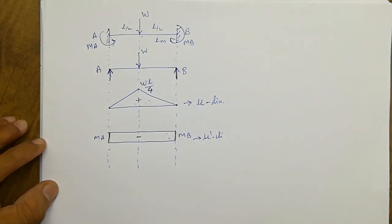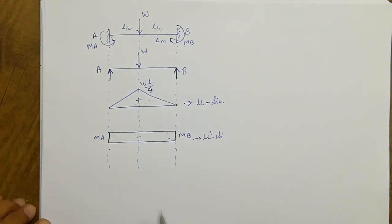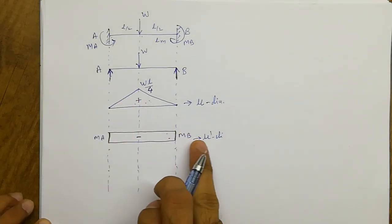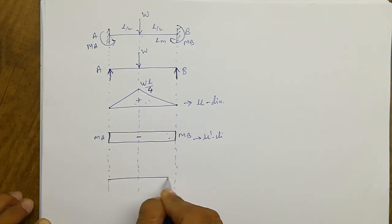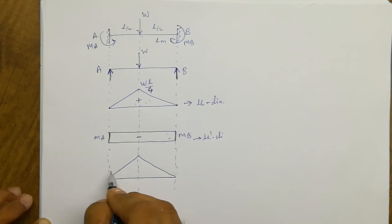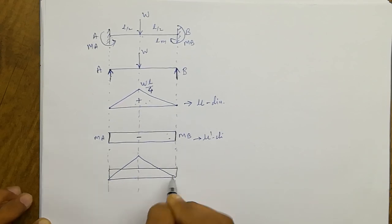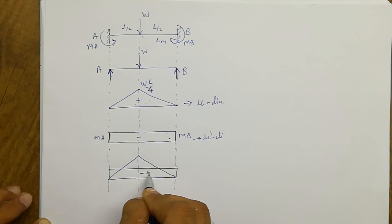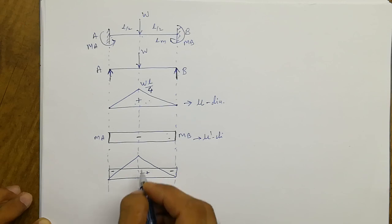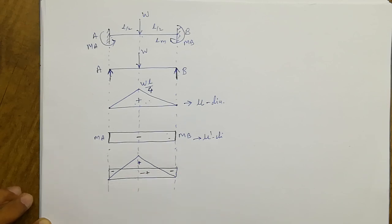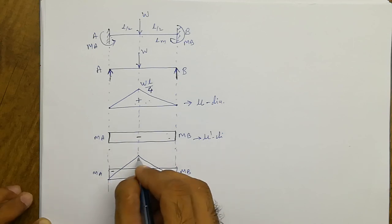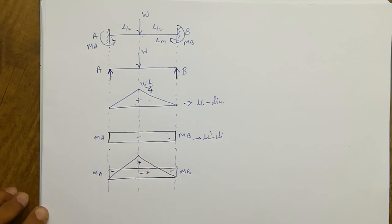If we club together the mu dash and mu diagrams, we will have the final bending moment diagram. So let me superimpose the mu dash diagram on the mu diagram. Negative and positive cancel at the ends. This portion is negative, this portion is negative, and this portion is positive. The coordinates are MB and MA at the ends, and WL/4 minus MB or MA at mid-span.